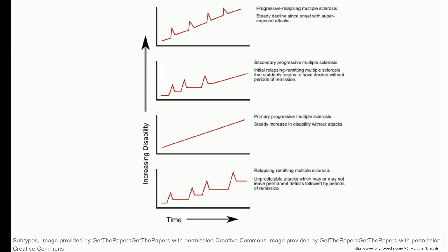In multiple sclerosis there are different types. The most common is the relapsing-remitting kind. The typical course is that a patient will have a flare where their symptoms get much worse, and then they get better and go back to baseline — but that baseline is a little bit worse than where they started. Time will go by and they'll be fine, then they'll get another flare, and again eventually come back to baseline, but that baseline gets worse and worse. Eventually the disease will progress.